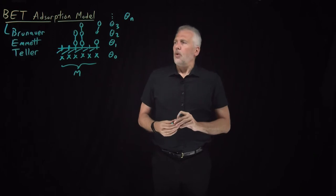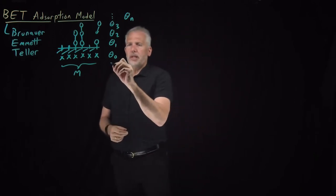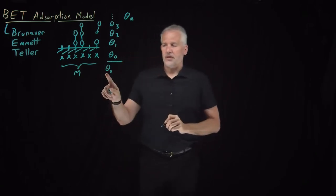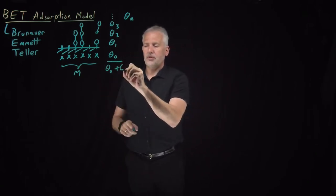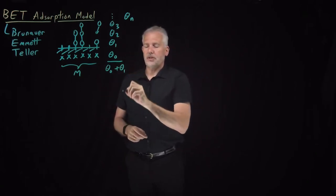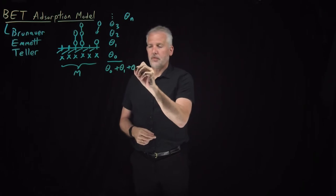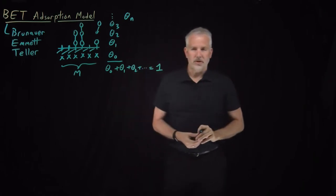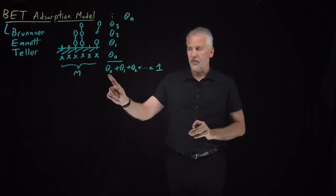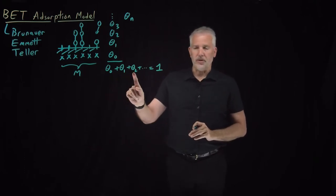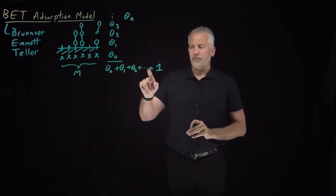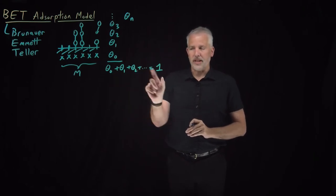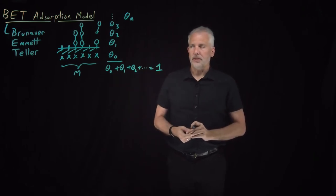One thing we can notice immediately is that if we add these numbers up — how much of the surface is covered by zero molecules, plus the fraction covered by one, plus the fraction covered by two, and so on — that has to add up to 100%. Those are mutually exclusive possibilities, so they must sum to 100%.